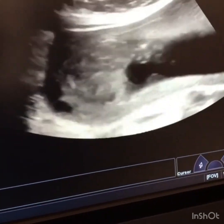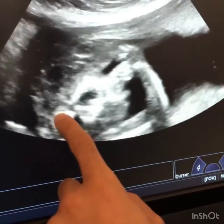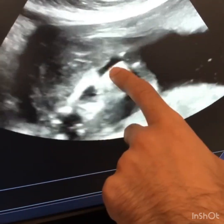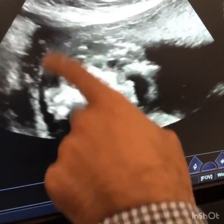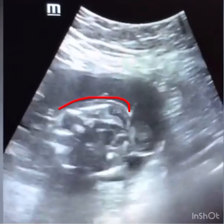Again, we can see the floating brain in amniotic fluid, which is even more anterior than the face. The third entity we want to review is encephalocele, which is a defect in the calvarium through which brain tissue or a cystic structure herniates.